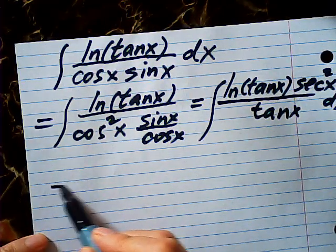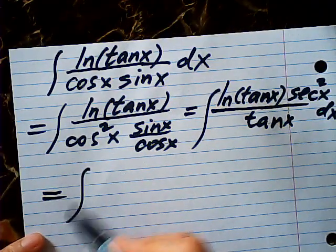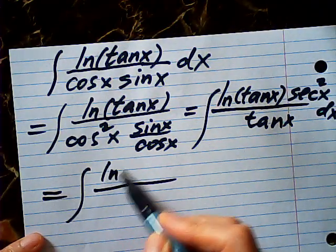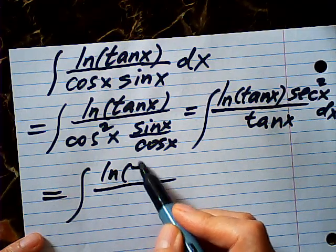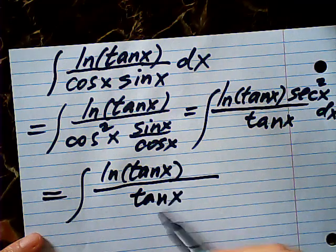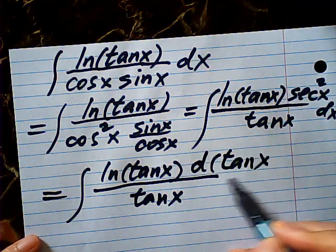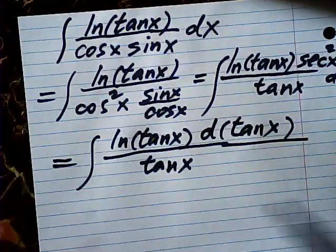So I can change your secant square dx to d tangent. So this becomes natural log tangent x, tangent x. This is a d tangent x.